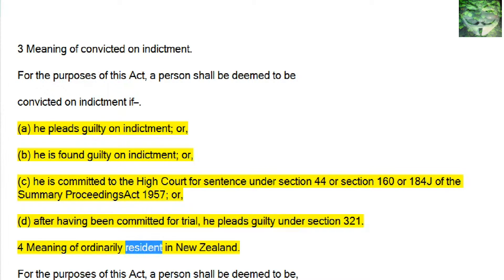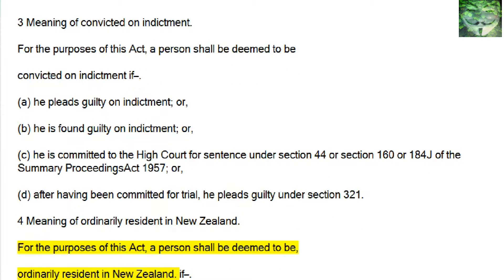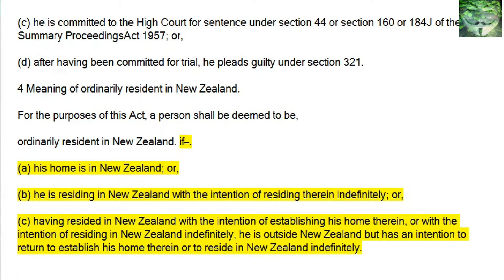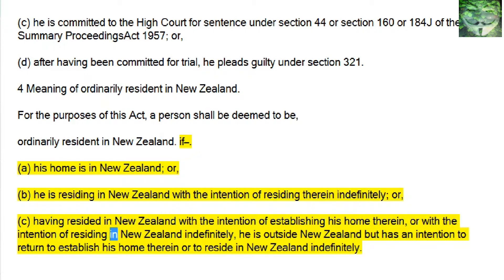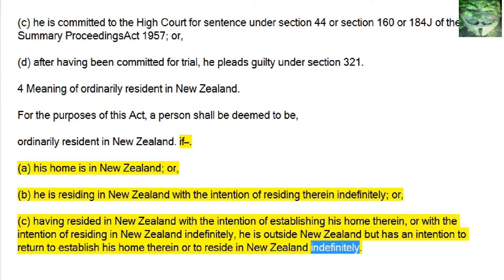Subsection 4 — Meaning of Ordinarily Resident in New Zealand. Subsection 5: for the purposes of this act, a person shall be deemed to be ordinarily resident in New Zealand if: a, his home is in New Zealand; or b, he is residing in New Zealand with the intention of residing therein indefinitely; or c, having resided in New Zealand with the intention of establishing his home therein or with the intention of residing in New Zealand indefinitely, he is outside New Zealand but has an intention to return to establish his home therein or to reside in New Zealand indefinitely.